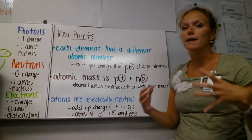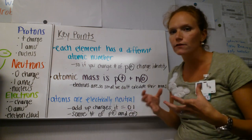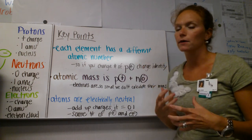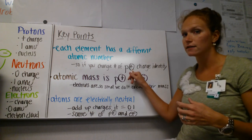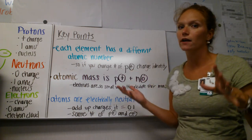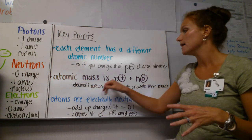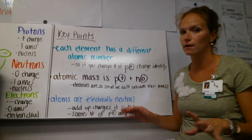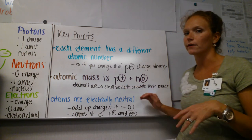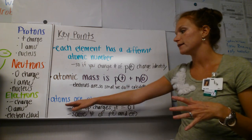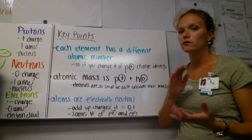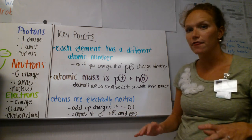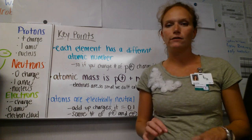A few key overarching points about the atom: Each element has a different atomic number because it's defined by its number of protons — change the protons and you change the atom's identity entirely. The atomic mass is the number of protons plus neutrons; electrons are not included because their mass is insignificant. And atoms are electrically neutral — they have the same number of protons as electrons, so all charges add up to zero. That's everything you need to know about the atom.